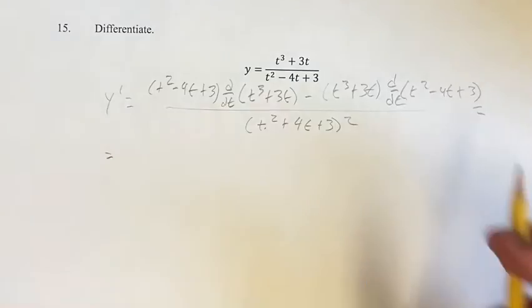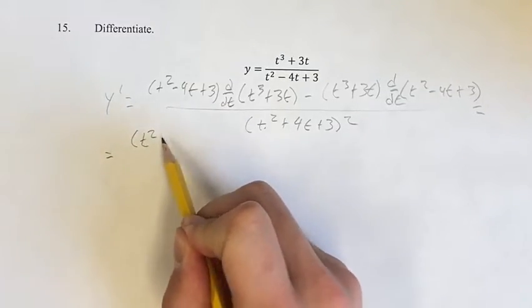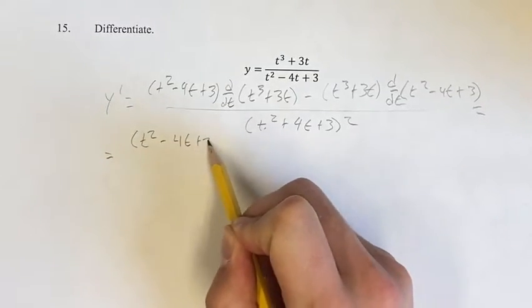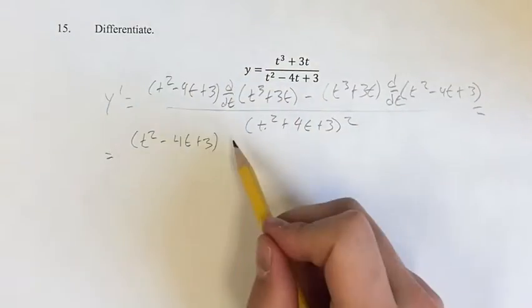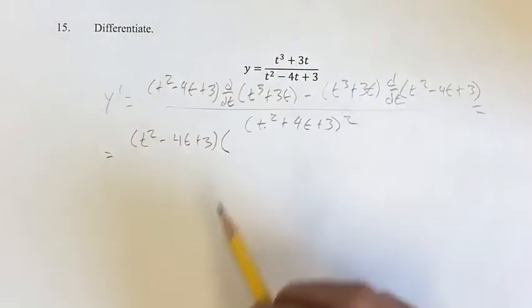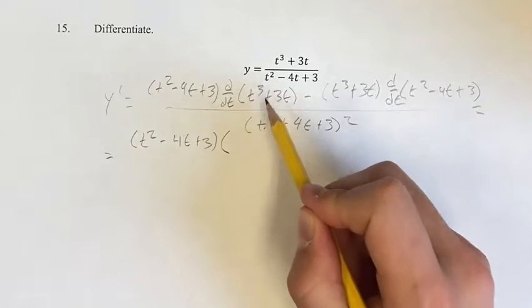Now that we know this, we can simplify everything. So you get t squared minus 4t plus 3. Calculating the derivative, we get the derivative of t cubed. We have a power function.